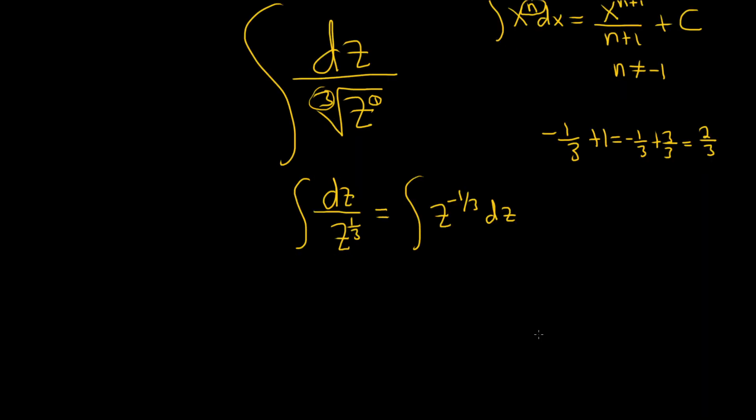So this will be equal to z to the 2 thirds, and then you divide by 2 thirds, and plus capital C.